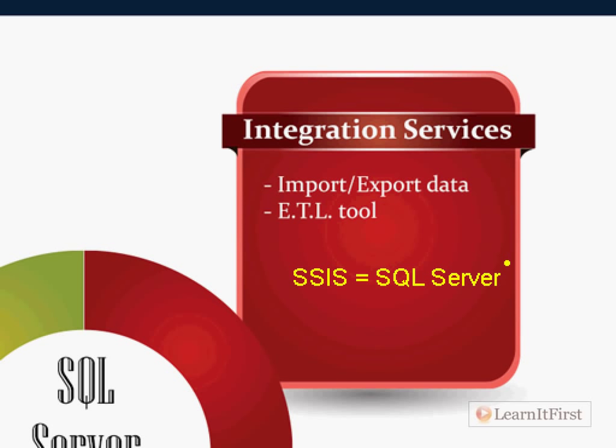ETL stands for Extract, Transform, and Load. You're taking data out of a source, transforming it — for example, you might concatenate first name and last name into a single full name column — and then loading it into a destination. So the source database has two columns, first name and last name; the destination has only one column, customer name. You transform after extraction, then load into the destination. It's a shuttle — not a database, simply a migration tool.